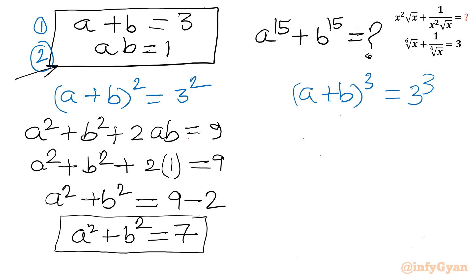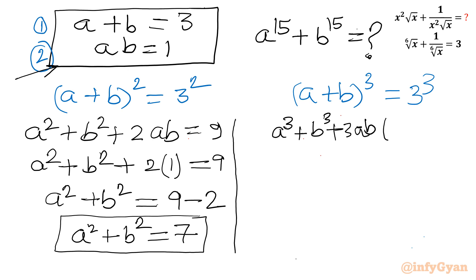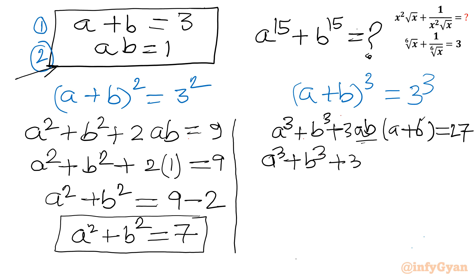Now we need a³ + b³. Applying the (a + b)³ formula: a³ + b³ + 3ab(a + b) = 27. Substituting ab = 1 and a + b = 3: a³ + b³ + 3(1)(3) = 27, so a³ + b³ + 9 = 27, giving a³ + b³ = 18.